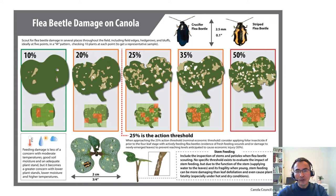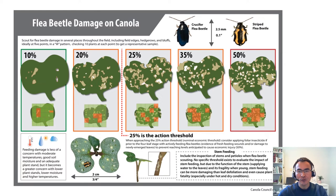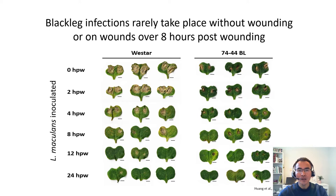Crucifer and striped flea beetles are commonly seen on the prairies, and when they feed, they create wounding injuries at the surfaces. Feeding damage can be assessed by estimating area loss on cotyledons and leaves. The feeding damage can range anywhere from 0%, 10%, 20%, 50%, and so on. As damage continues, they can cause leaf defoliation as well as plant fatality when there is a dense population of flea beetles. As recommended by the Canola Council of Canada, the normal economic threshold to apply insecticide spray is when you see 25% leaf area loss.